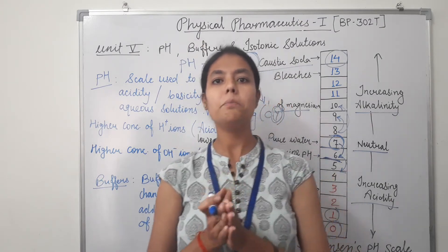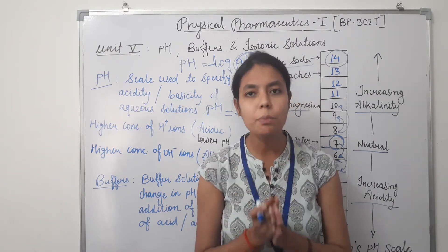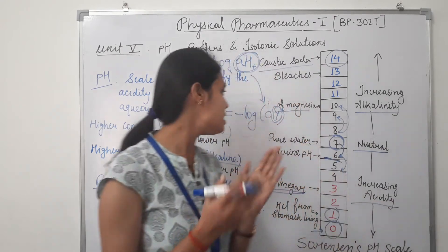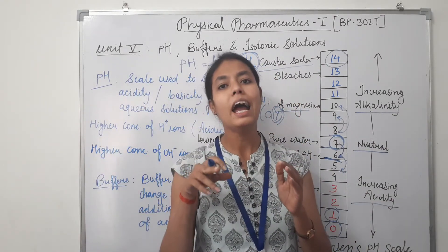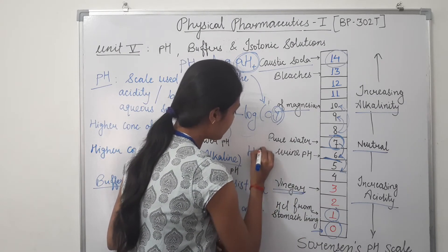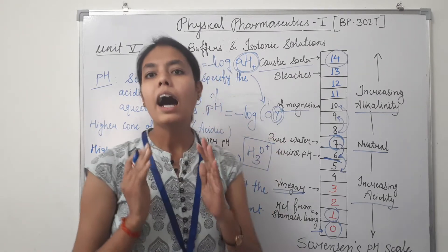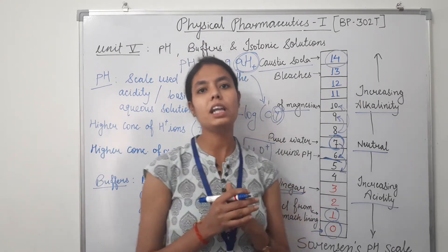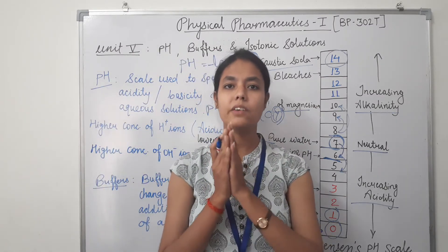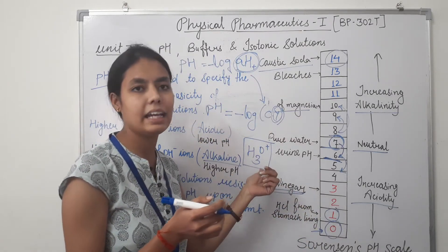Sorensen defined pH as the logarithm of the reciprocal of the hydrogen ion concentration. Mathematically, it is expressed as pH = log(1 / [H⁺]). If we rearrange this equation, pH = log(1) − log[H⁺].